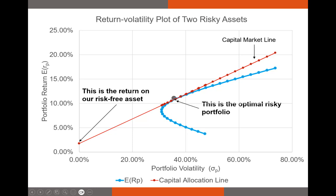This capital market line represents every point we can reach, represented by some weight to our risk-free asset and our risky portfolio. Right here is where we invest all of our wealth in our risky portfolio of stocks and other risky assets, and right here is where we invest everything in T-bills. Here would be where we invest 50% in T-bills and 50% in risky stocks. The points beyond the risky portfolio occur when we short T-bills and invest that cash in more stocks.